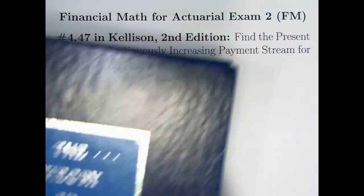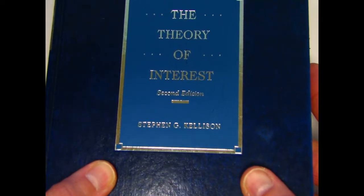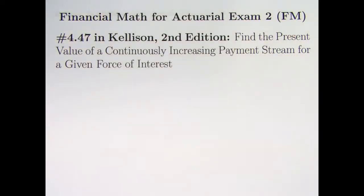So I'm once again going back now to the book by Kellison, The Theory of Interest, 2nd edition, to look for problems in there. There are more problems to choose from related to continuous annuities in that book. So this is going to be problem 4.47 from that book.